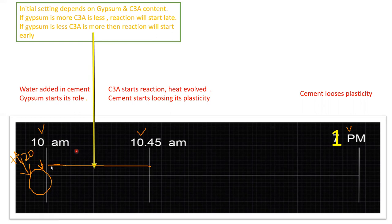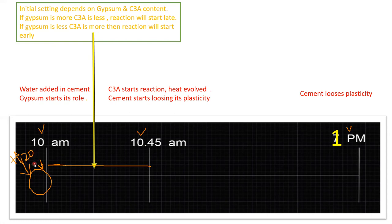The initial setting time depends on gypsum and tricalcium aluminate content. If gypsum is more and tricalcium aluminate is less, the reaction starts late. If gypsum content is less and tricalcium aluminate content is more, the reaction starts early. So the time from 10:00 AM to 10:45 AM depends on both gypsum and tricalcium aluminate content.